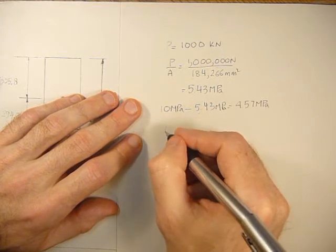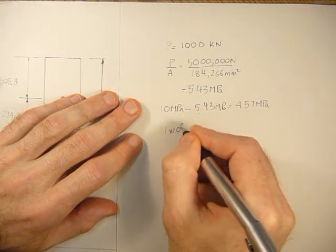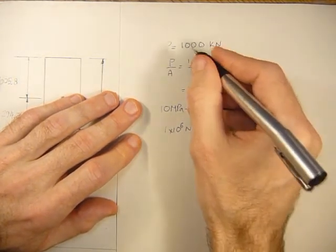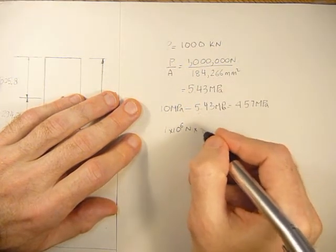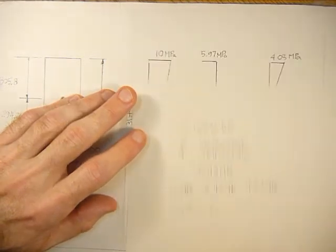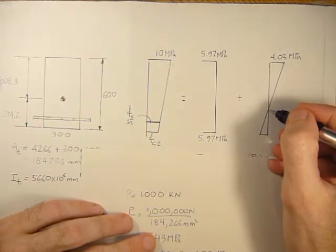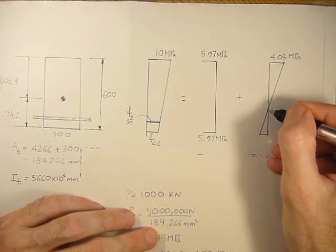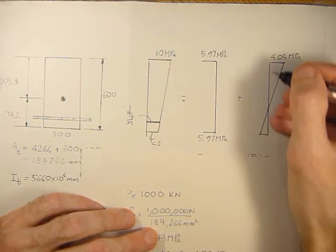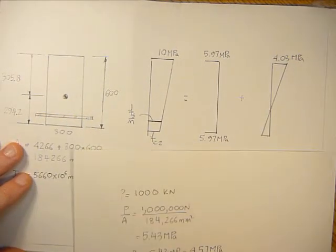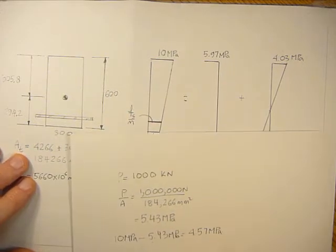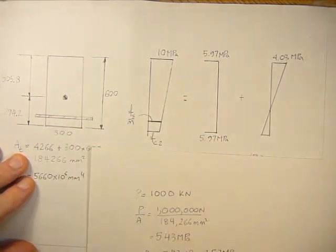P is known, that's 1 times 10 to the sixth newtons, the 1,000 kilonewtons, times E times the Y bar, which is the distance from the centroidal axis of the pure flexure to the top fibers. We calculate that as 305.8. That won't change as long as neutral axis is below the section.